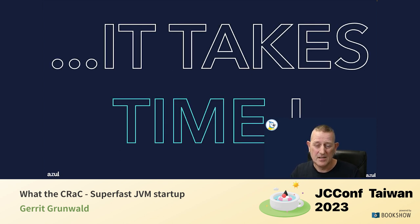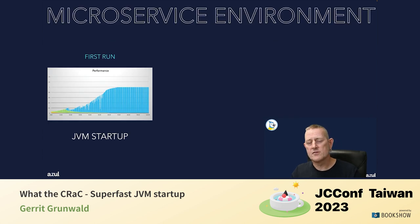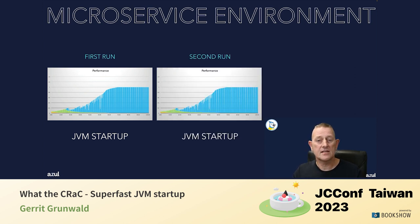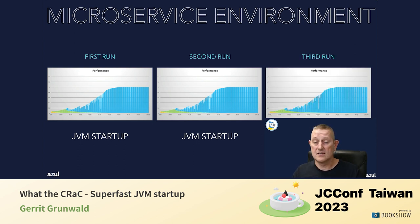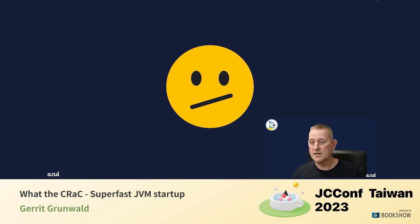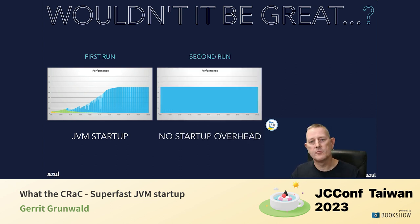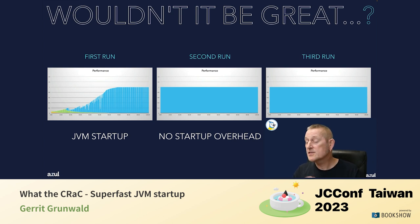If we take this into microservice environments, which are very common today, it means every time you start your service it has to go through interpretation, C1, C2 until it reaches full performance. Second time you start it — same thing. Third time — same thing again. The JVM has no memory between restarts; it has to redo all optimizations every time. Wouldn't it be great if after the first start, every subsequent start is already at full performance level?